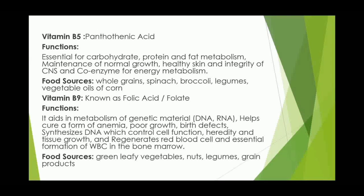Vitamin B5 (pantothenic acid). Functions: essential for carbohydrate, protein, and fat metabolism; maintenance of normal growth, healthy skin, and integrity of the central nervous system; and co-enzyme for energy metabolism. Food sources: whole grain, spinach, broccoli, legumes, and vegetable oils such as corn oil.